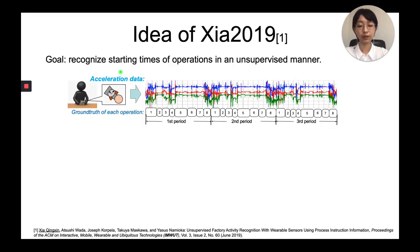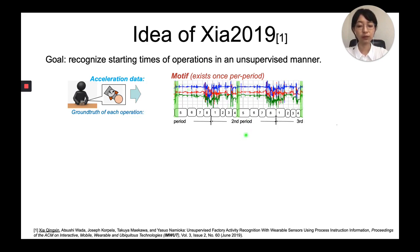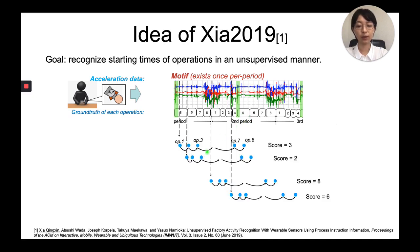So last year, we tried to recognize the starting time of operations using unsupervised learning method, which consists of two main parts. First, find the characteristic data segment motif that appears only once in each period. It's able to use three motifs to determine the duration of the middle period. And in the second step, we generate multiple particle series, where each particle represents the starting time of the end operation.